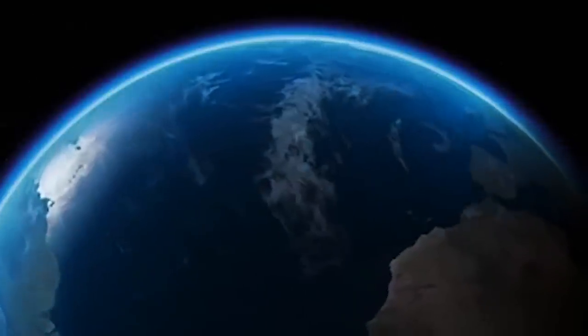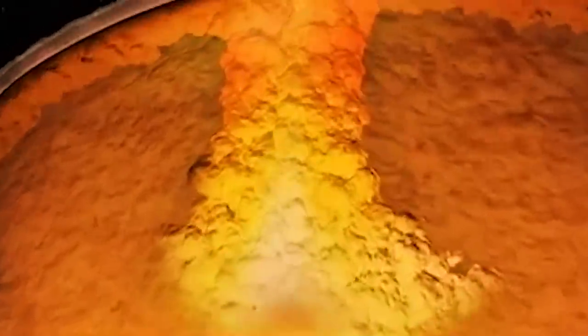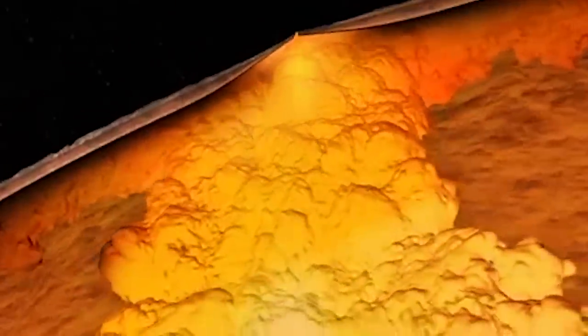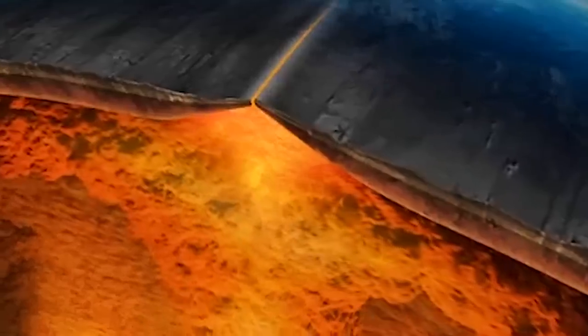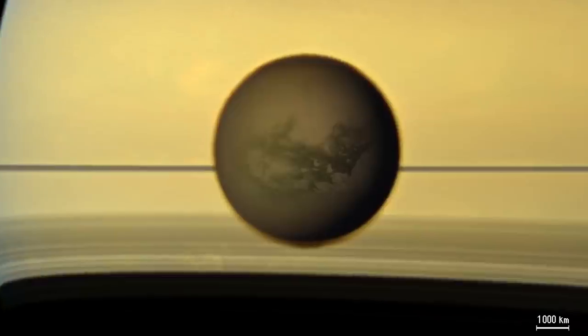On Earth, the crust sits on top of the upper mantle, which is made up of hot, high-pressure rock that slowly flows over long periods of time, causing land masses to shift as they have since the time of Pangaea.